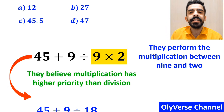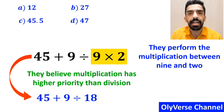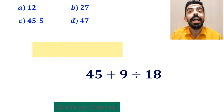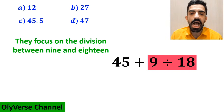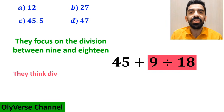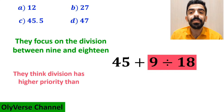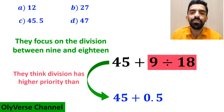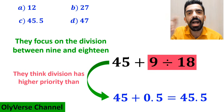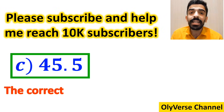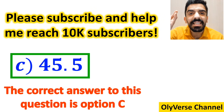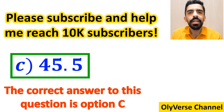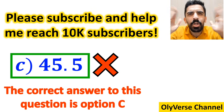So they rewrite this expression as 45 plus 9 divided by 18. In the final step, they focus on the division between 9 and 18 because they think division has higher priority than addition, and they rewrite this expression as 45 plus 0.5, which finally gives them the answer 45.5. They conclude that the correct answer is Option C — however, this answer is absolutely wrong.